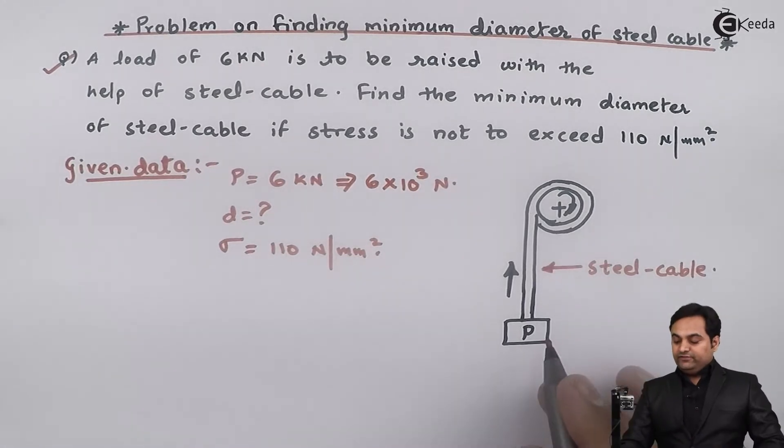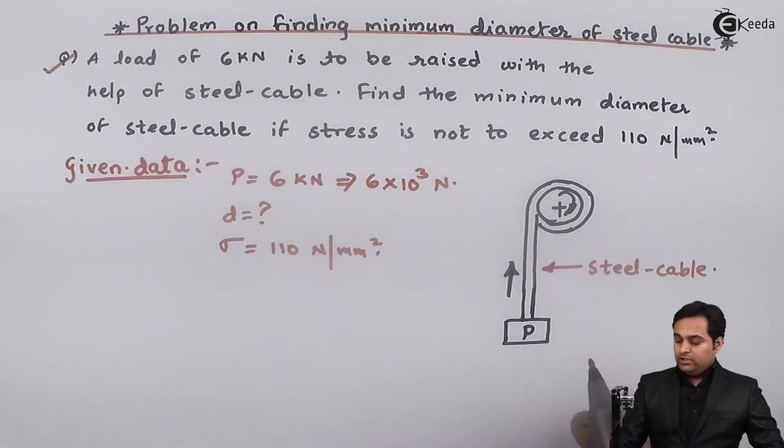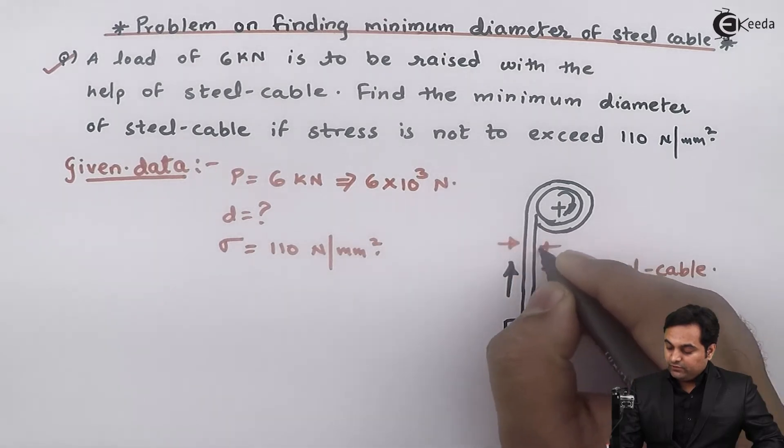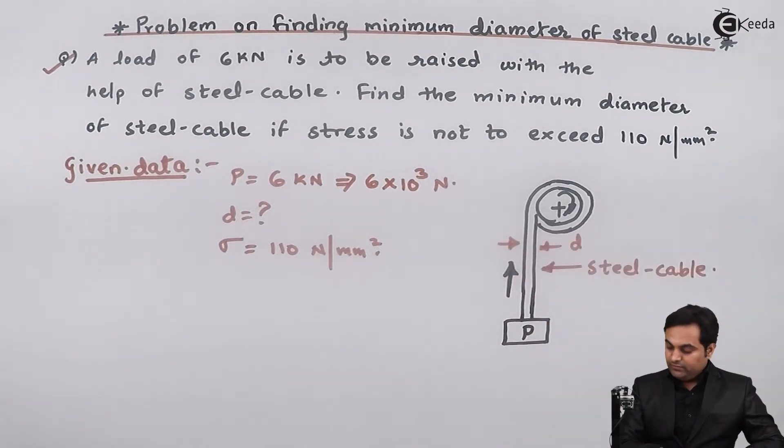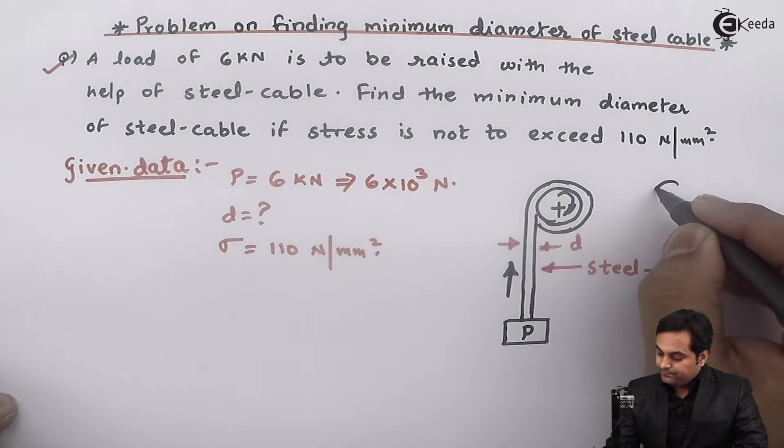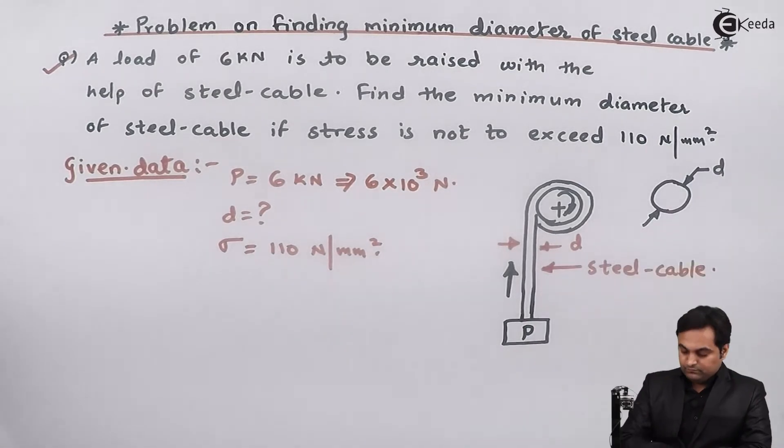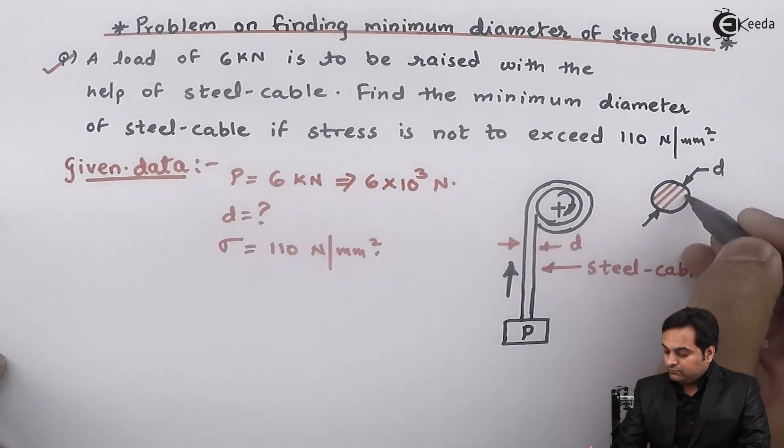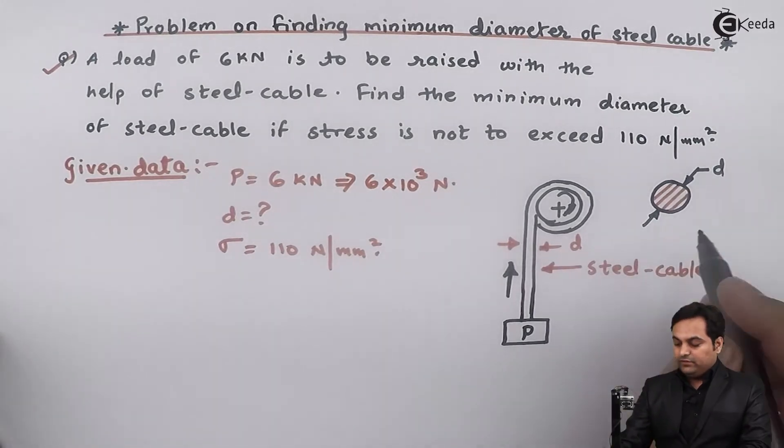And this load is having a value of 6 kilonewtons, and this is the steel cable. So we have to calculate that for lifting a load of 6 kilonewtons, how much should be the diameter of the steel cable. If we look at the cross-section, it will be circular in shape, so we have to calculate this diameter of the steel cable.